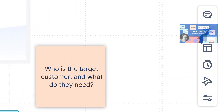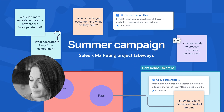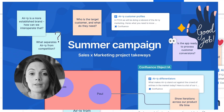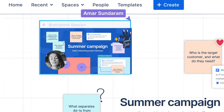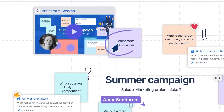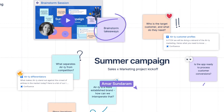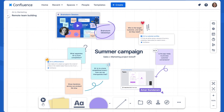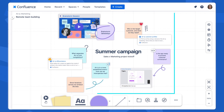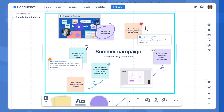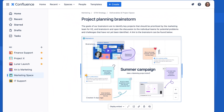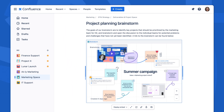When you're done, record a Loom video recapping key takeaways from the brainstorm session. This will help you and your team jump right back into the brainstorming mindset when you revisit this session in the future. You can also embed this whiteboard on a Confluence page as you move from ideation to execution.